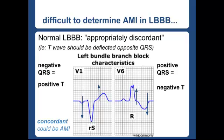Let's talk about what a normal left bundle branch block looks like. A normal left bundle should be appropriately discordant, meaning the T wave should be deflected in the opposite direction as the QRS. For example, in V1 the QRS goes down and the J point and T wave should be deflected opposite — so positive. In V6, you have a positive QRS and a negatively deflected T wave. That is a normal left bundle branch block with appropriate discordance.